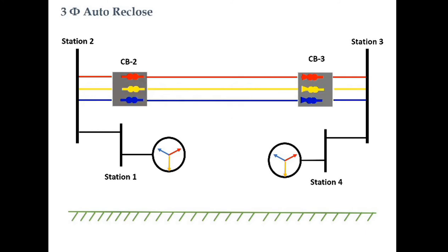Three-phase auto reclosure schemes are generally followed in substations where gang-operated circuit breakers are used. This type of scheme is generally used at the 132 kV level and below, while single-phase auto reclosure schemes are generally used at 220 kV and above level substations. From the figure, it can be observed that all phases of the circuit breakers are enclosed in a single enclosure — these circuit breakers are operated by a single mechanism. So for a single-phase fault, the whole circuit breaker — all three phases — will open, and for reclosure, all three phases will close together.